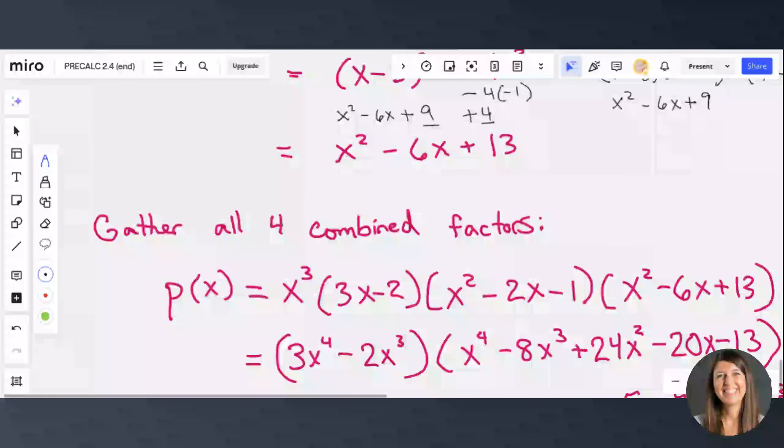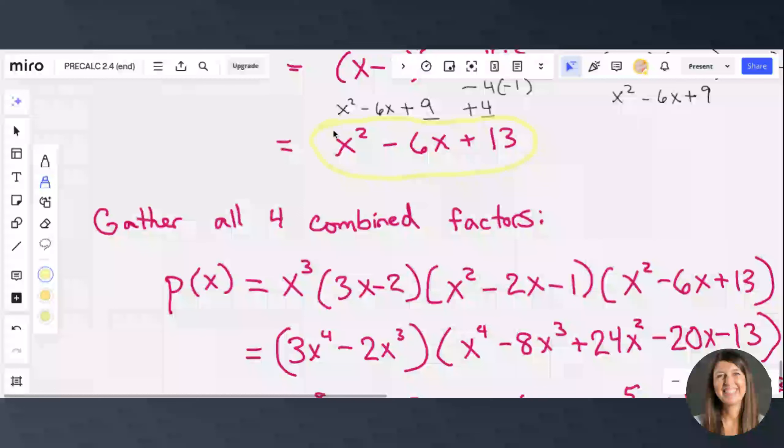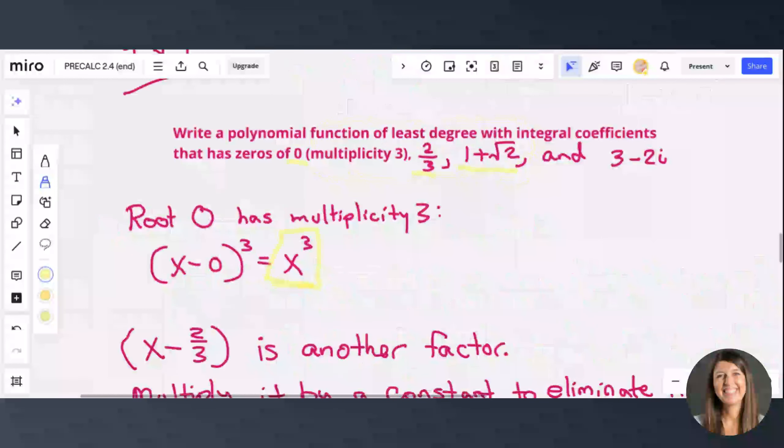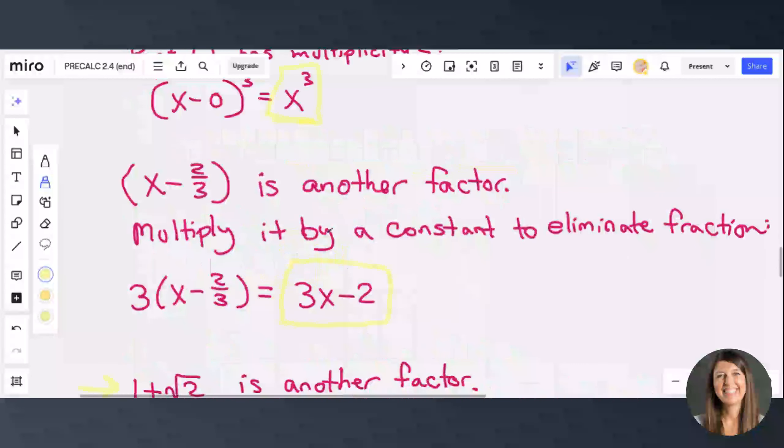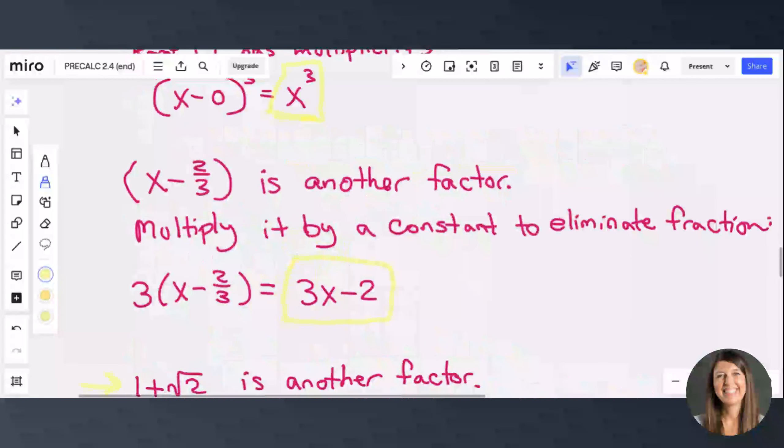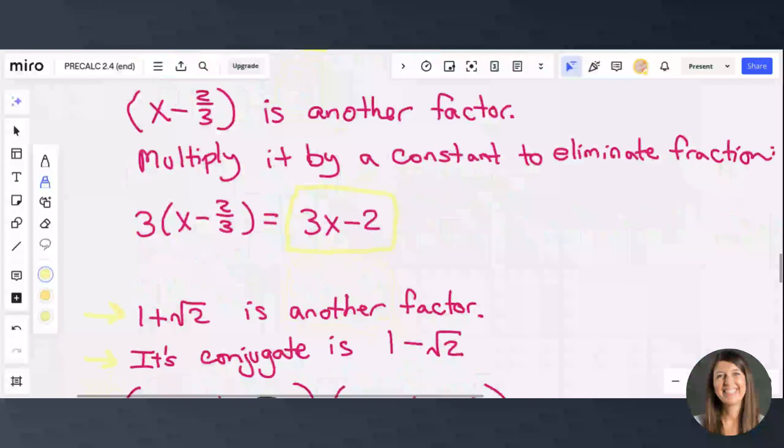So now we're going to gather all our terms, or all our factors, I should say. So let's scroll back up and review what we did. We had all our zeros, all our roots of some polynomial function that they want us to find out. And we found out that we've got x cubed as a factor. We've got 3x minus 2 as a factor.